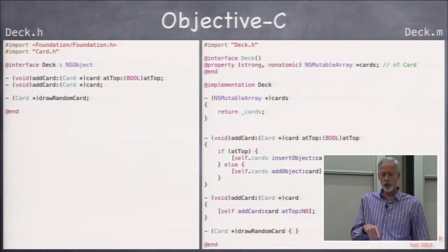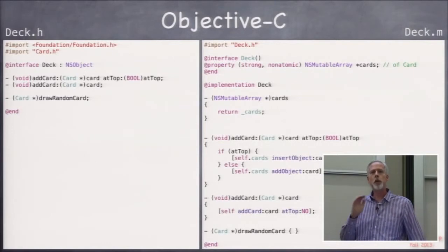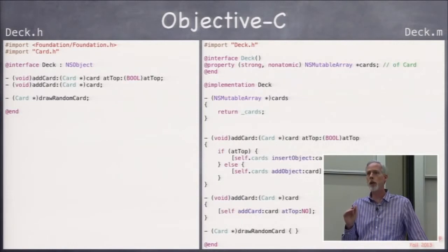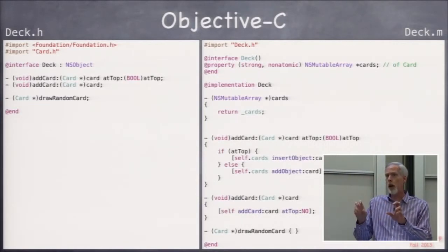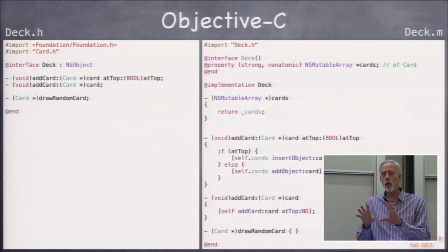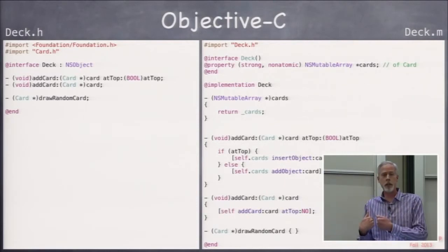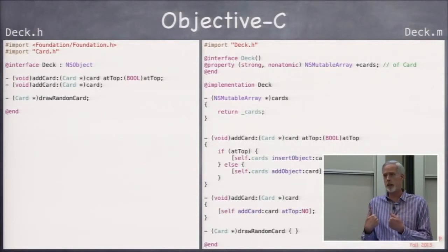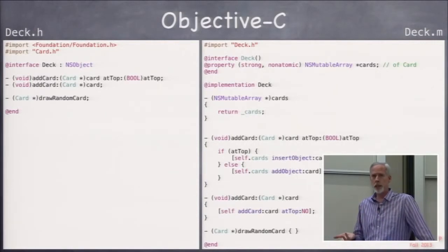When we execute the code in addCards, like self.cards addObject:card, that's not going to crash, but not do anything either. Because you can send messages to nil, send messages to pointers to objects that's not pointing to one at the time, and it will not crash. If you send a message that returns a value, that message will not execute any code, but it will return zero.